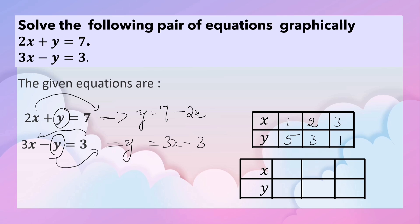When x is equal to 0, y is equal to negative 3. When x is equal to 1, y is equal to 0. When x is equal to 2, y is equal to 3.